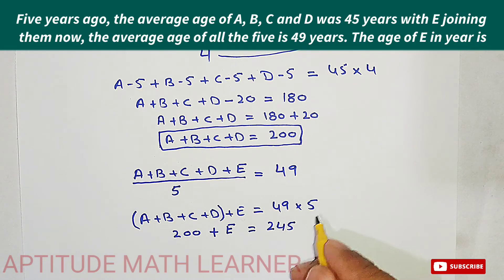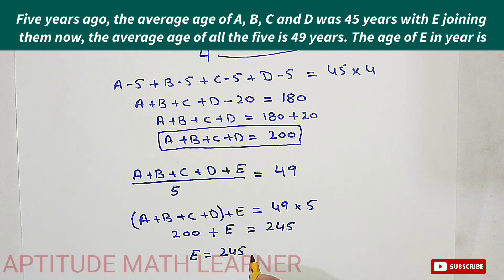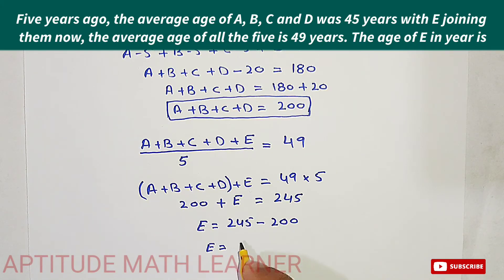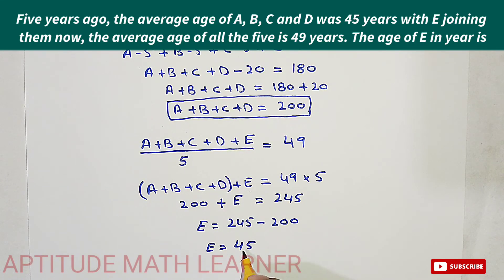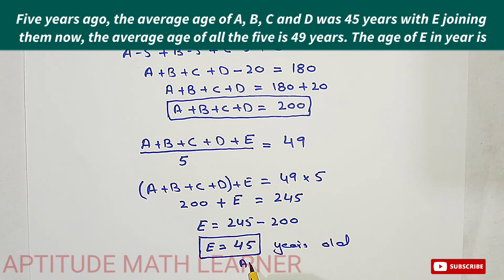49 multiplied by 5 equals 245. So 200 + E = 245, which gives E = 245 − 200 = 45. Therefore, E is 45 years old. I hope you have completely understood the question and the method for solving it. Thank you very much.